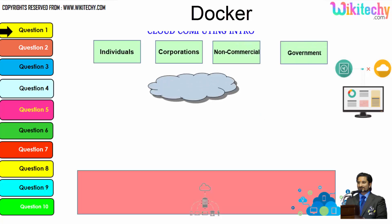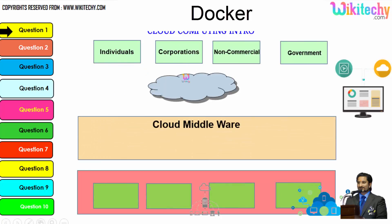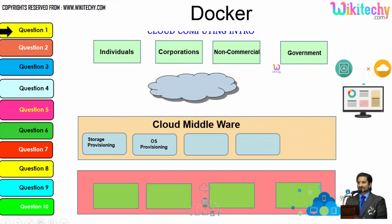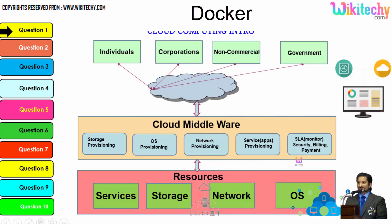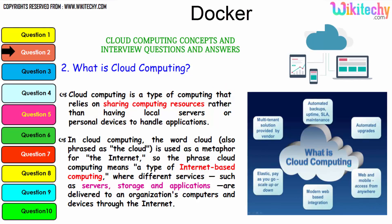There are different types of users — individuals, corporations, non-commercial people, and government. From any of these users, they are able to access services, storage, network, or operating systems via the cloud. Middlewares are specialized software provided by the cloud service provider to let end users access resources. This is the cloud computing architecture.